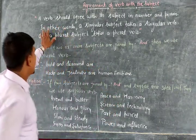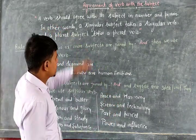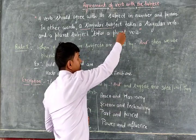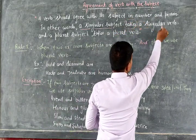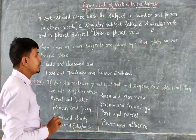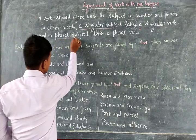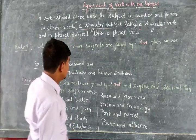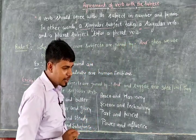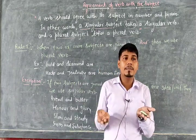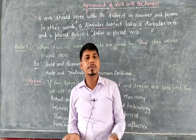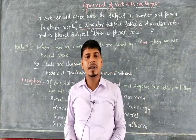In other words, a singular subject takes a singular verb, while a plural subject takes a plural verb. Subject and verb must be balanced. If the subject is singular, the verb must be singular. If the subject is plural, then the verb must be plural.